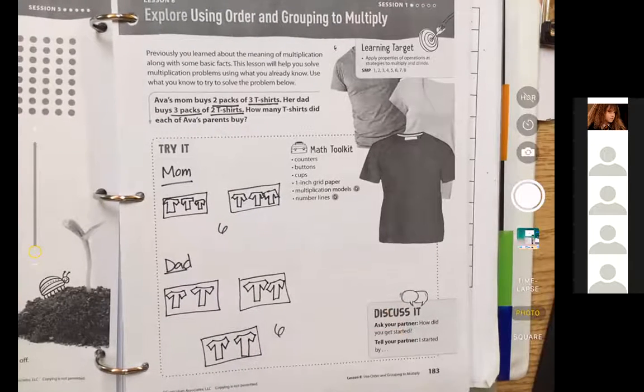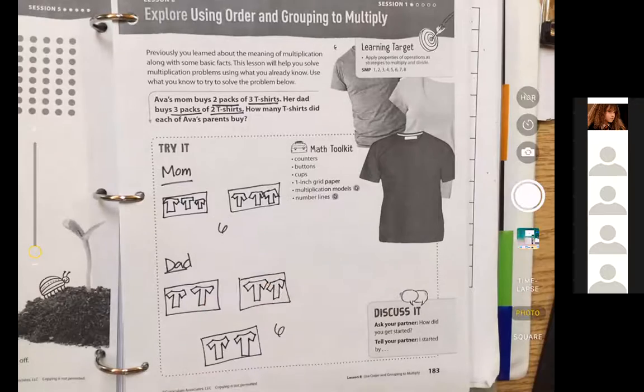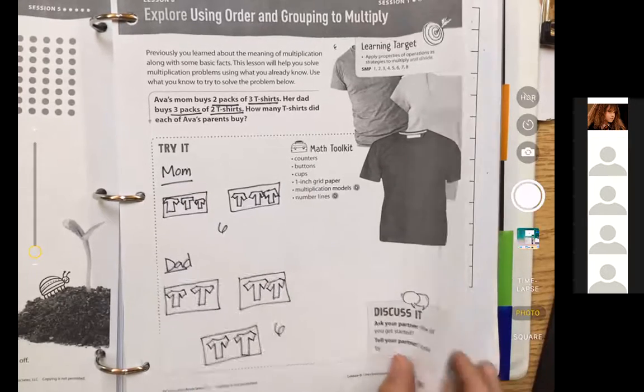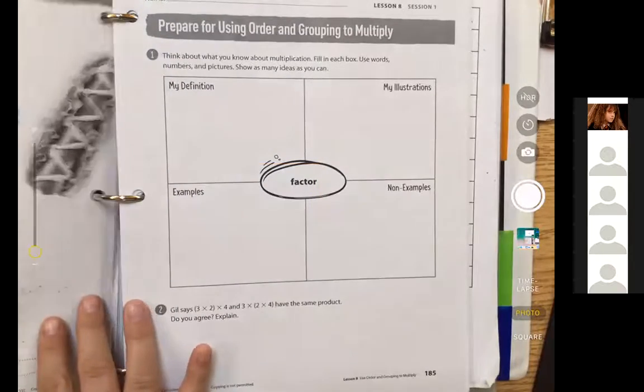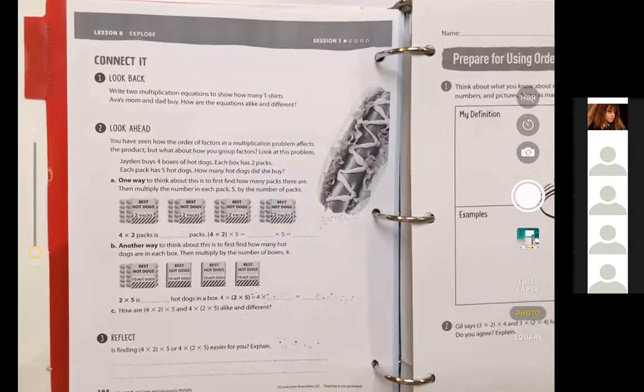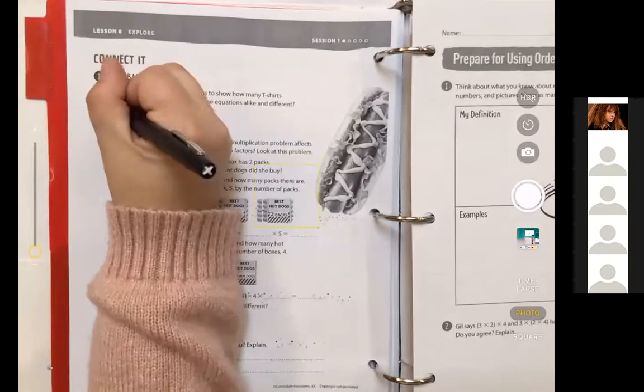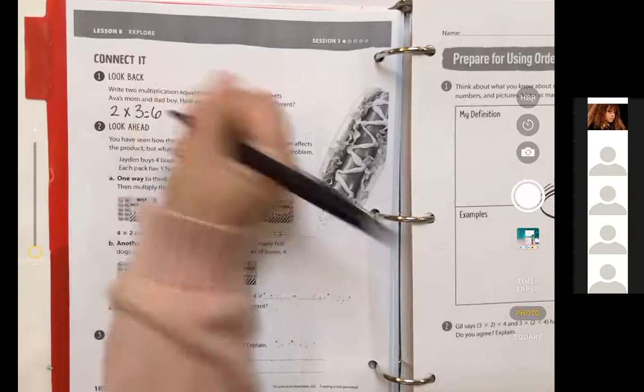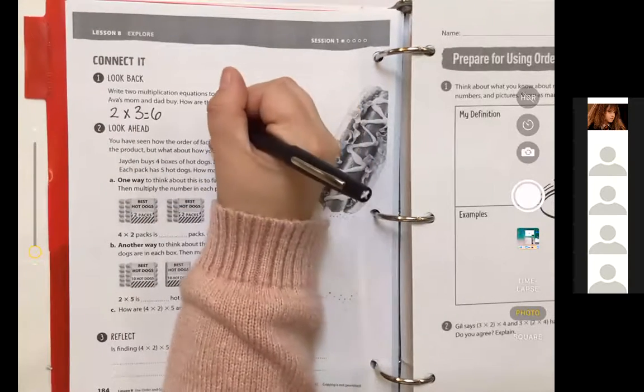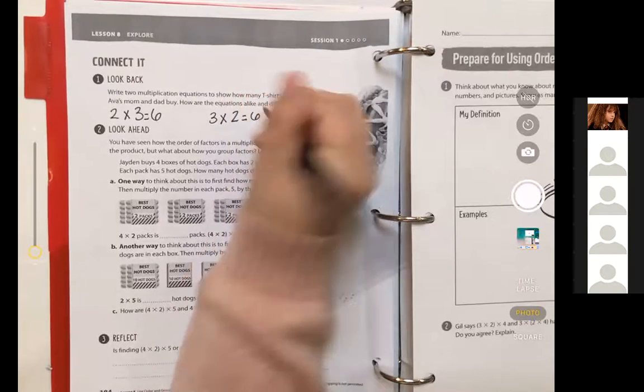So if we look, her mom bought six, her dad bought six. Did they buy the same packs, though? They didn't. But even though it was two packs of three and three packs of two, they both bought six shirts. So if you turn the page to page 184, we're going to talk about what that means. So here it says, write two multiplication equations to show how many t-shirts Ava's mom and dad buy. How are the equations alike and different? So if we look, mom bought two groups of three and got six. And her dad got three packs or groups of two, but also got six.